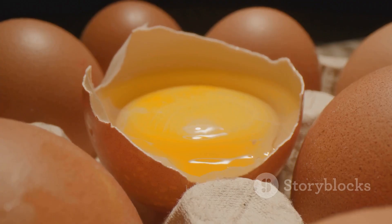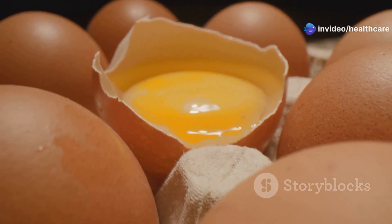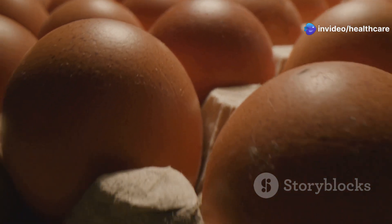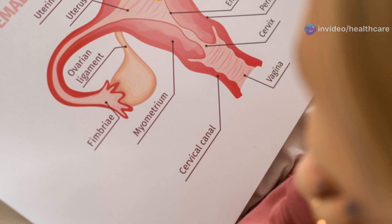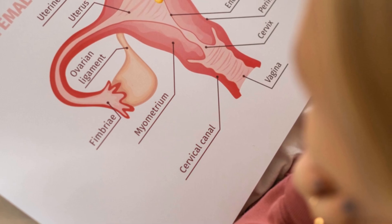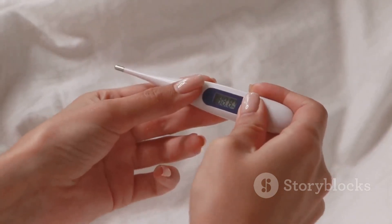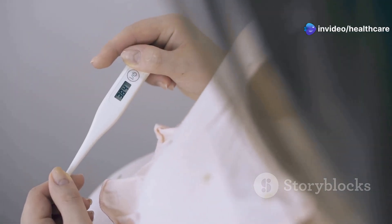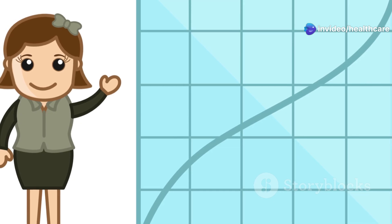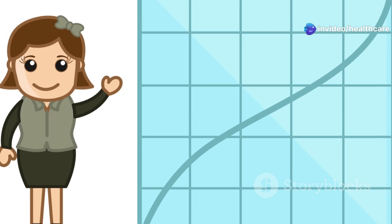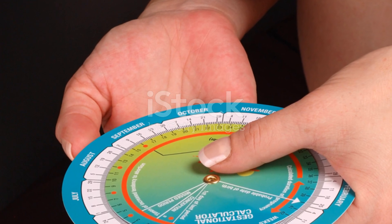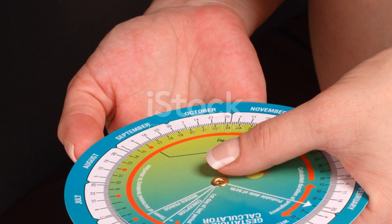Another method is monitoring your cervical mucus. As ovulation approaches, the cervix produces more mucus that becomes clear, slippery, and stretchy — resembling raw egg whites. Basal body temperature (BBT) tracking is also popular: after ovulation, there's a slight increase in BBT due to the hormone progesterone. By taking your temperature every morning before getting out of bed and charting it, you can identify this temperature shift.